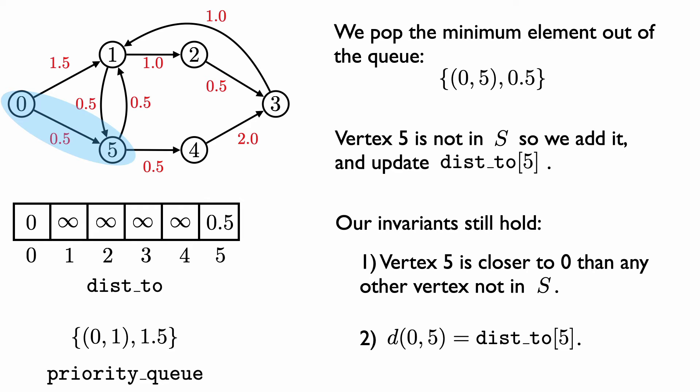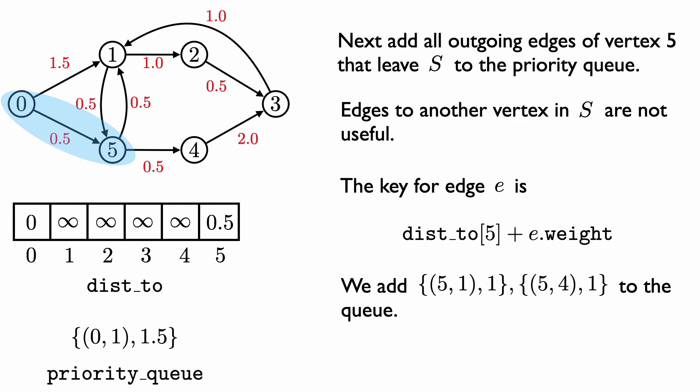We update dist2 of vertex 5 to be dist2 of 0 plus the weight of the edge from 0 to 5, so we set dist2 of 5 equal to 0.5. Our invariants still hold: dist2 of 5 is the correct distance from vertex 0 to vertex 5, and vertex 5 is the closest vertex in the graph to vertex 0 (excluding 0 itself). Next, we add all outgoing edges of vertex 5 that leave the set S to the priority queue. Edges from vertex 5 to vertices already in S are not useful since we've already found shortest paths to all vertices in S. The key for an edge is dist2 of 5 plus the weight of that edge — the length of a shortest path from 0 using that edge as the last edge.